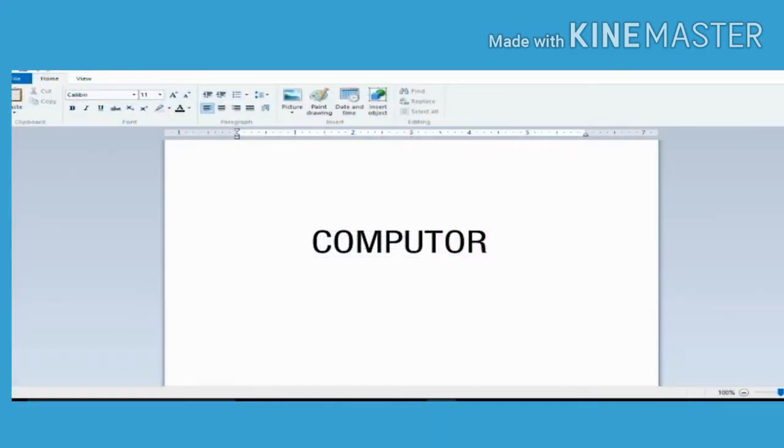For example, to correct the spelling of computer from C-O-M-P-U-T-O-R to C-O-M-P-U-T-E-R, take the cursor after the letter you want to erase, after O, now press the backspace key to erase, and then type E in this place. This way you can correct the spelling of the word computer.